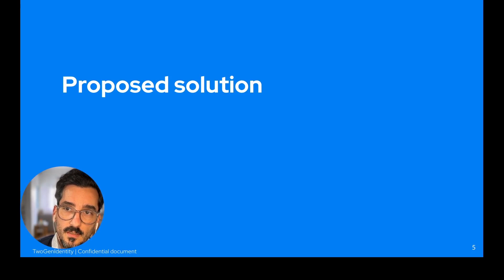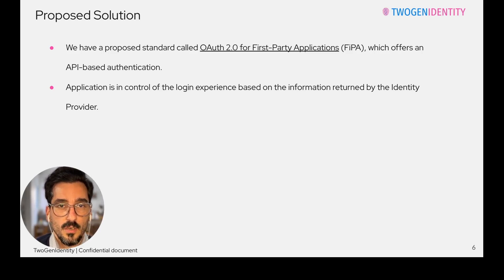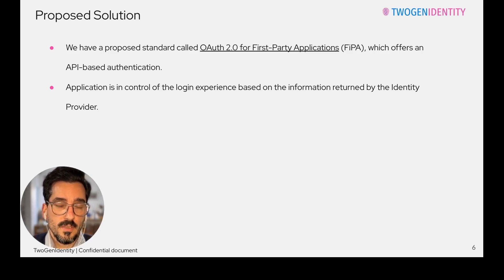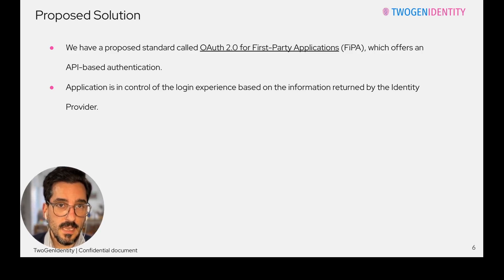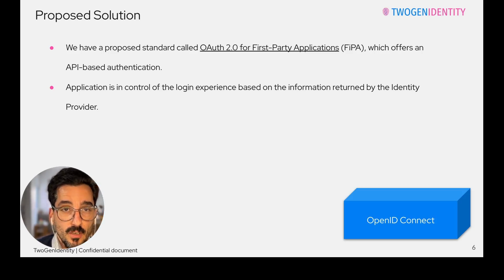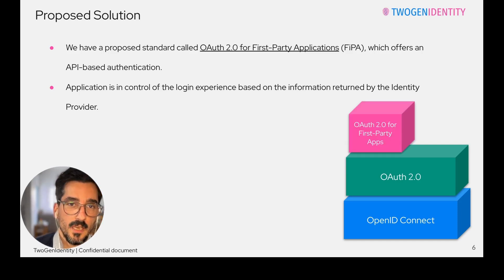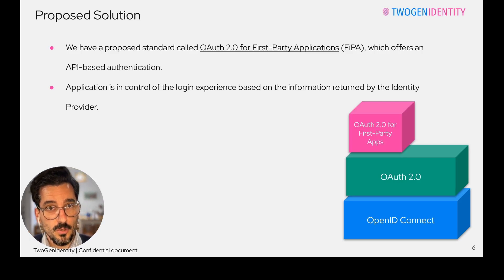In the next slide, we're going to start discussing the proposed solution. Nowadays we have a draft called OAuth2 for First-Party Applications, which offers an API-based authentication approach. Following this specification, you end up having a direct integration between the application and the IDP. Thanks to that, the application is able to follow and implement the authentication steps defined on the identity provider. We are implementing OpenID Connect for handling the authentication, then OAuth2 as an access delegation standard, and on top of it the OAuth2 for First-Party Applications. This specification is an extension of OAuth2, which is great, and it introduces a new endpoint used by the application.